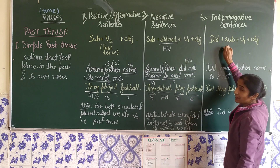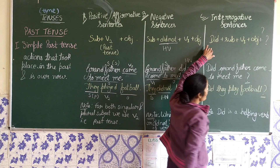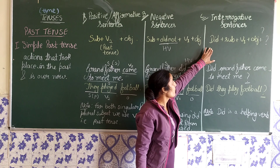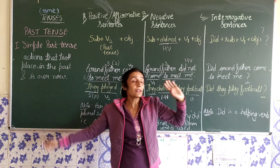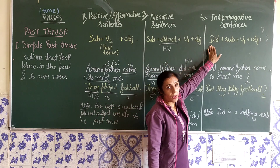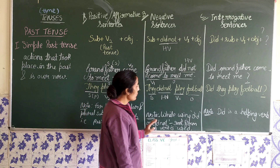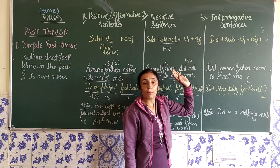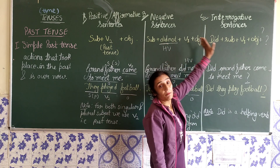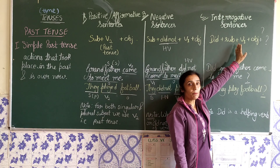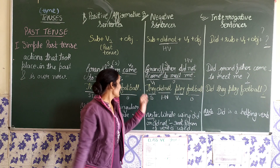Now come to the interrogative sentences. Interrogative sentences are questions — a question mark must be there. When we form interrogative sentences in simple past tense, first we use the helping verb 'did', then the subject, then the verb in its first form, then the object, and don't forget to put the question mark.